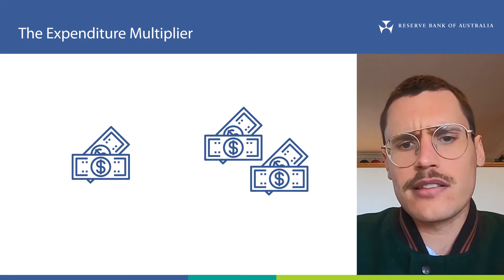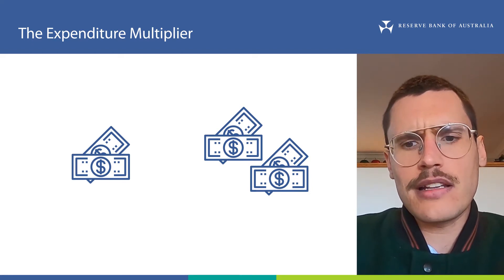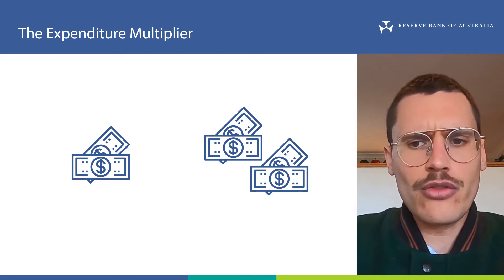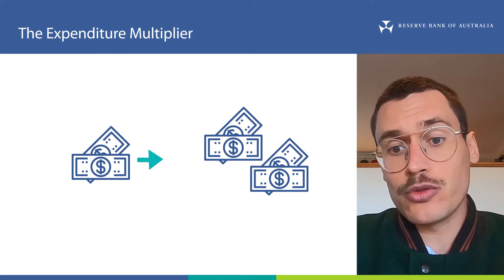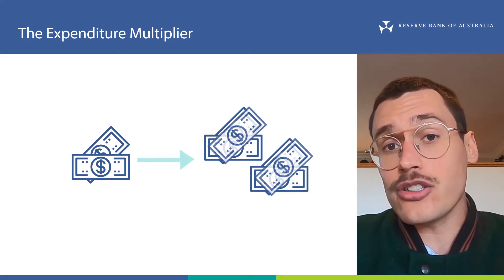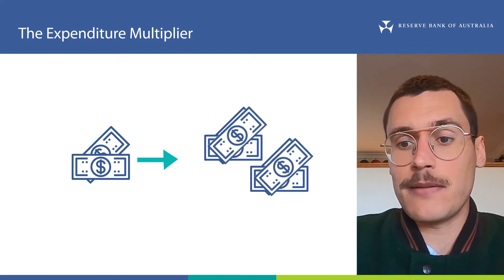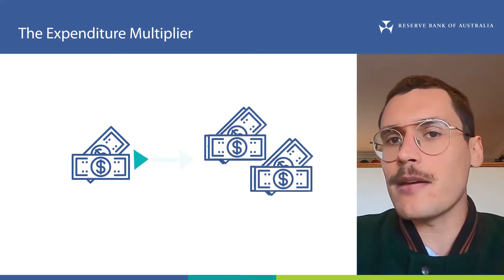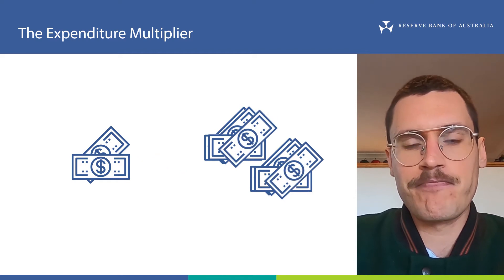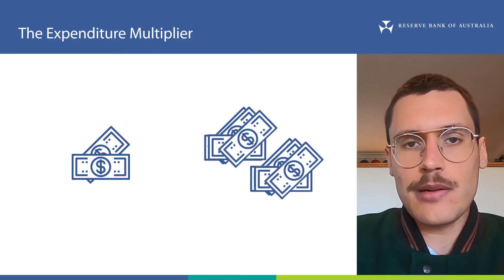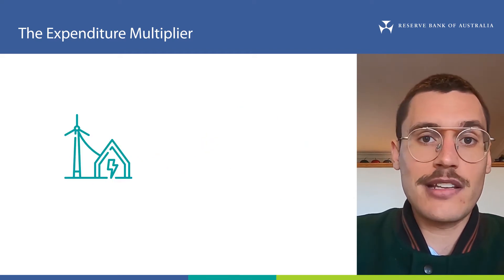Why is this? Well, as money flows through the economy, it's spent multiple times, and each time that it's spent, this makes a separate contribution to GDP. Let's think about this more with an example.